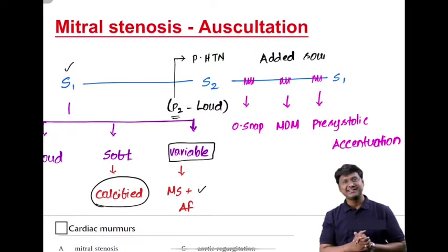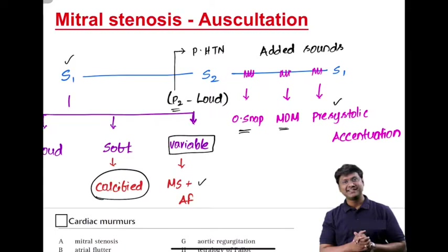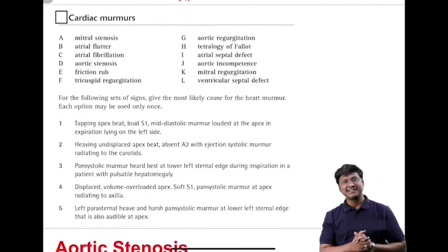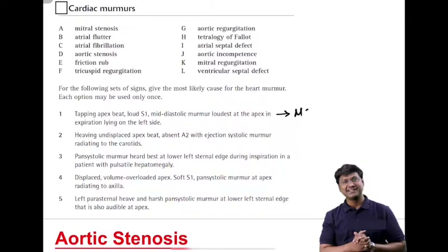Added sounds in mitral stenosis include an opening snap — a high-pitched sound due to forceful opening of the mitral valve during early diastole — followed by a mid-diastolic murmur, which is low-pitched, heard at the apex, increases on expiration, and is best heard in the left lateral position. Pre-systolic accentuation occurs due to forceful left atrial contraction.